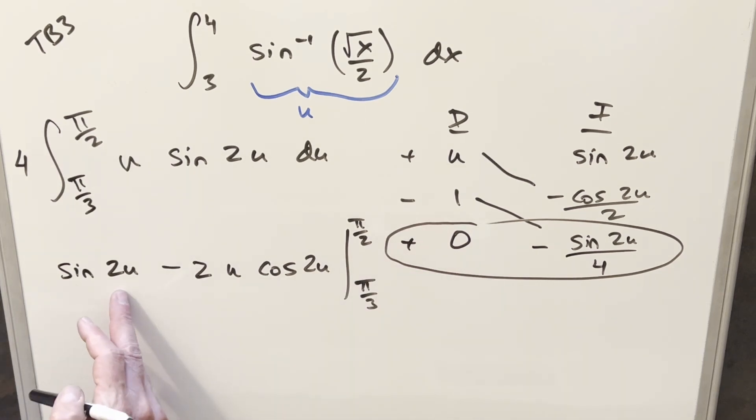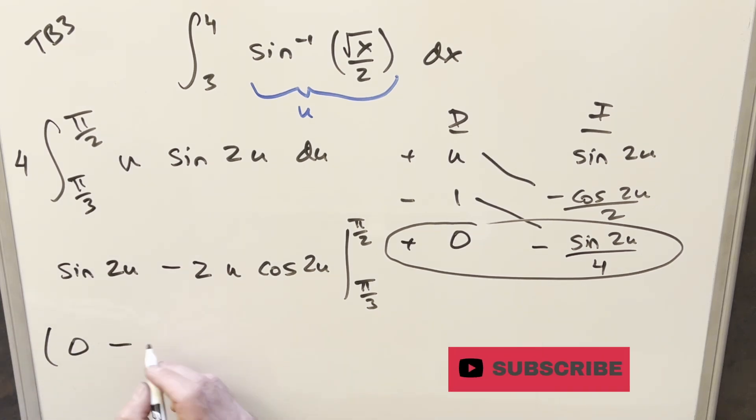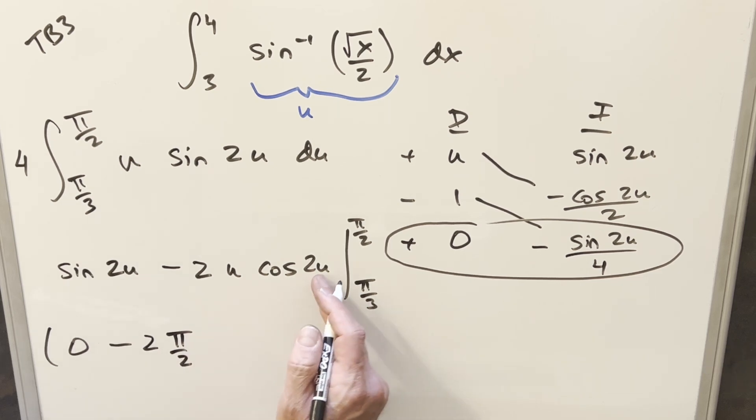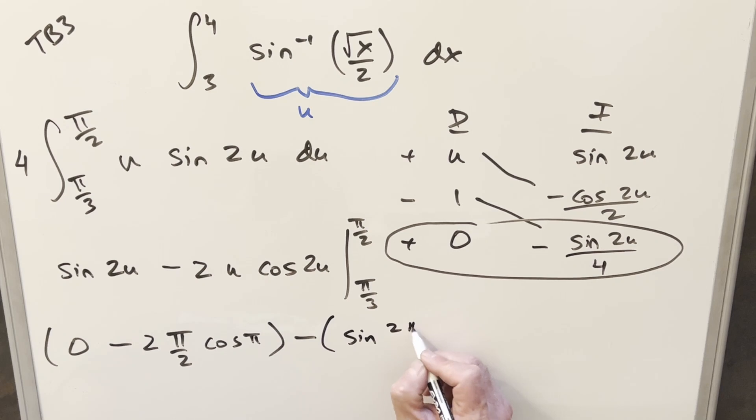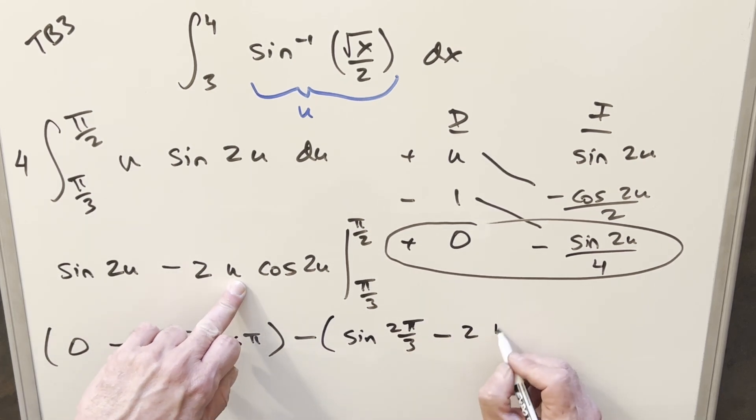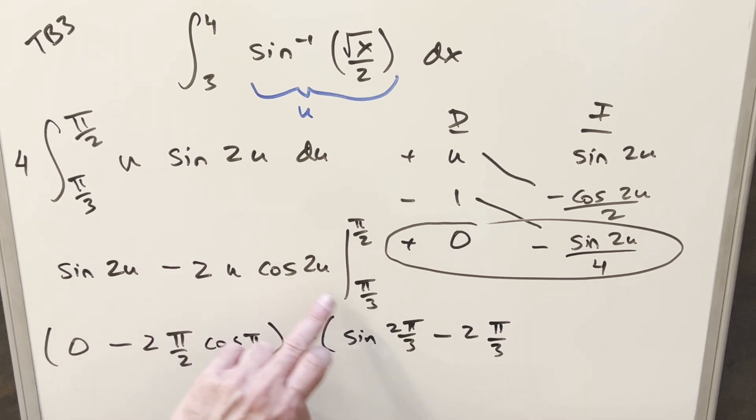Plug in pi over two. Pi over two times two is sine of pi. That's going to be zero. So let me write everything down. So that's going to be zero there. Then here minus two u is pi over two. And then cosine two times pi over two. That's going to be cosine of pi. I'll come back and evaluate in a second. Then plugging in pi over three. Here this is going to become sine two pi over three. Minus two plug in pi over three. And then plugging into the last part, this is going to become cosine two pi over three.